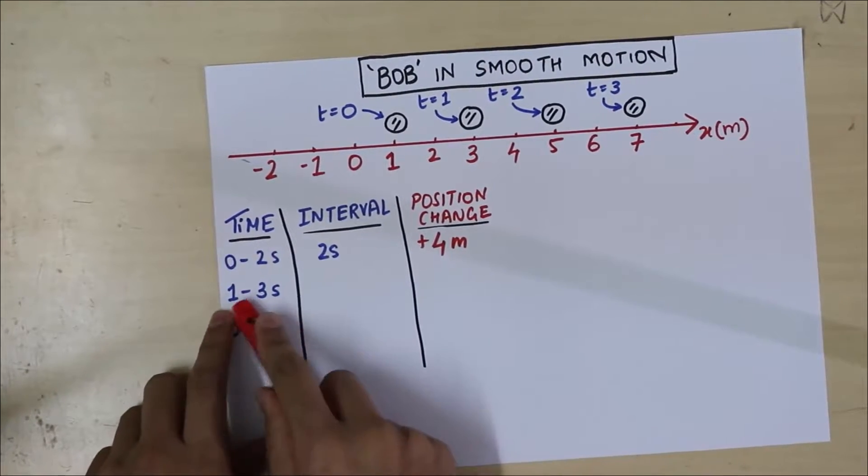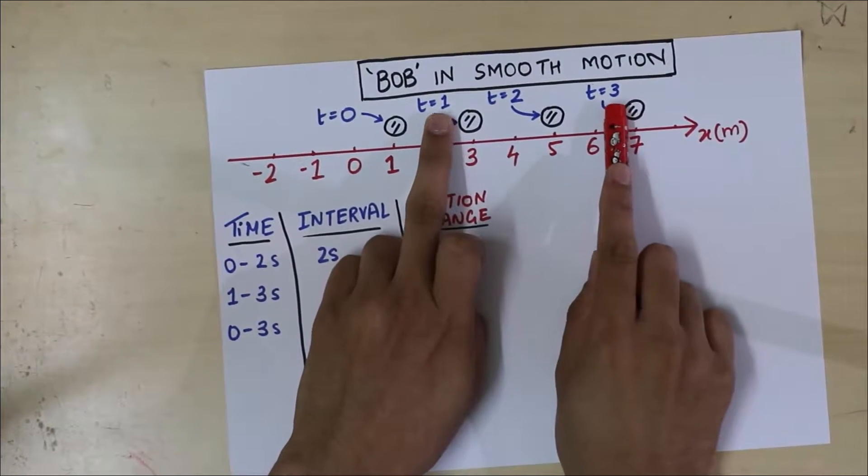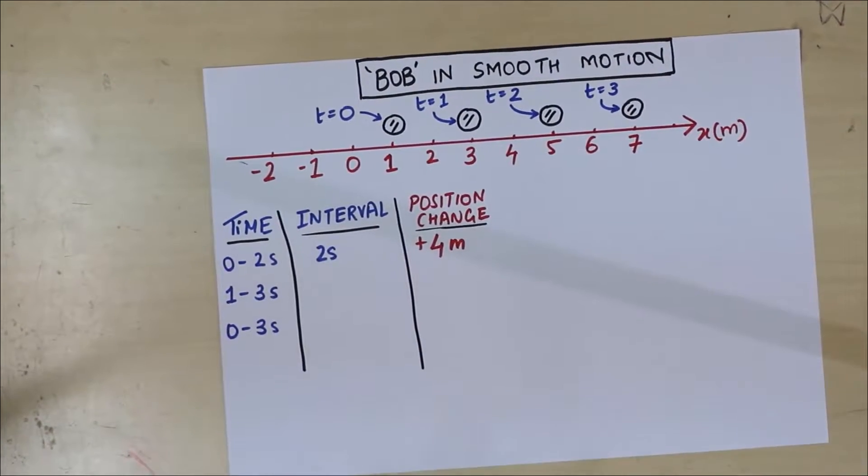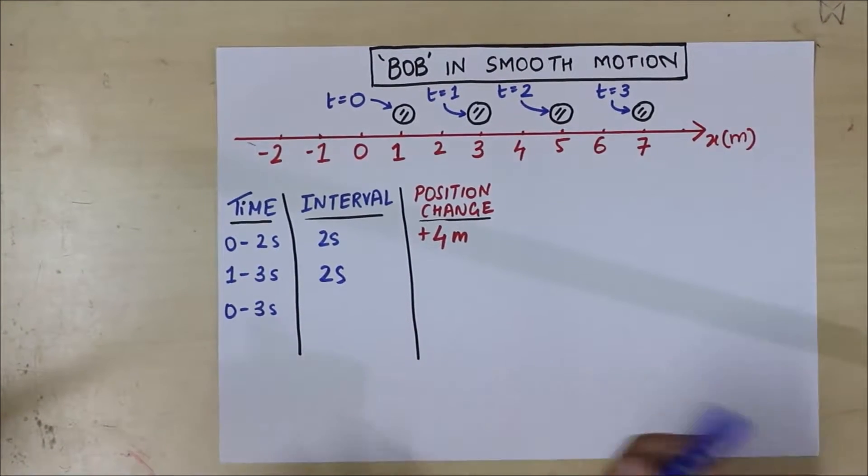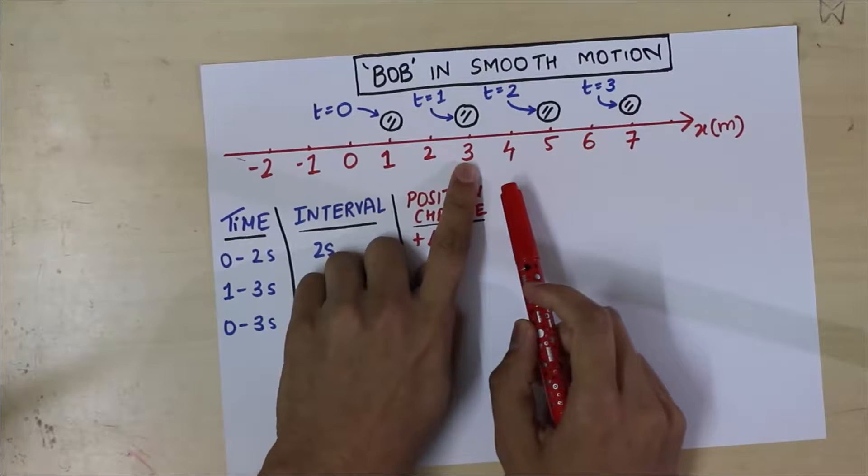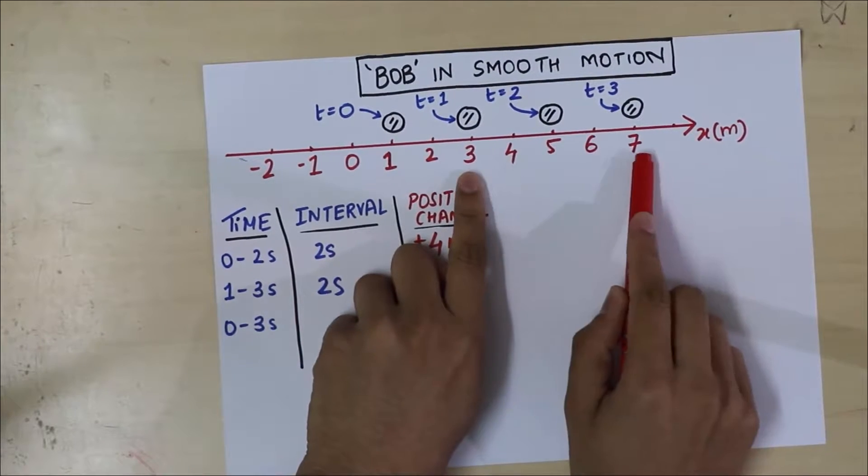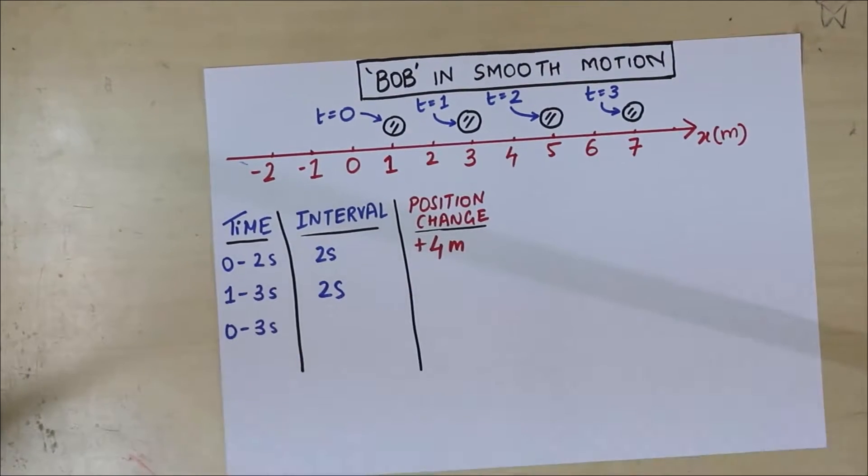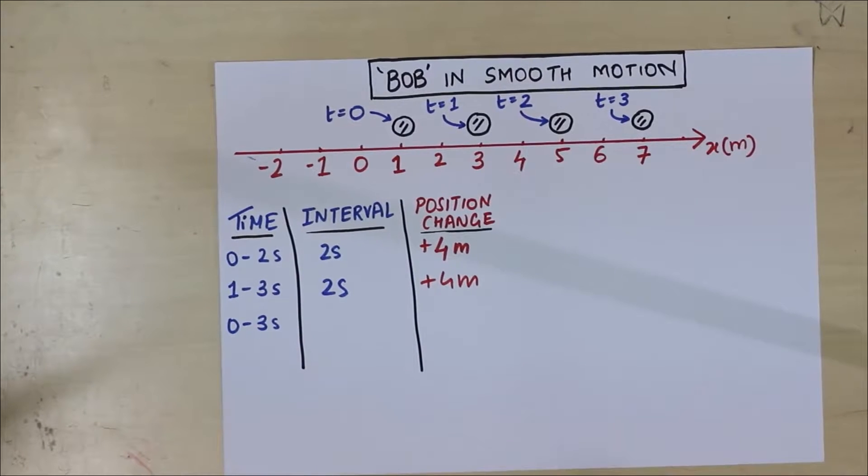If it had moved towards the left side, it would have been decreased in position. So the position has increased by 4 meters. Let's take some other time interval. Let's go from 1 to 3. 1 to 3. What is the time span? Well, that's again 2 seconds. And what's the change in position? It's again at 3 and goes to 7. 3 to 7 is 4. You see that? 1, 2, 3, 4. It's again at plus 4 meter. Interesting.